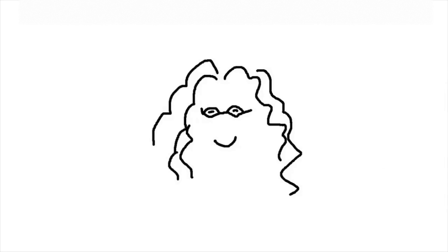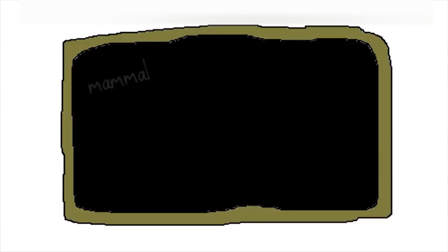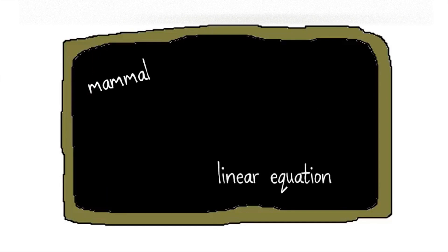This is Jennifer Gonzalez for Cult of Pedagogy. I'm going to demonstrate an instructional strategy called concept attainment. This is a technique for introducing a new idea, for helping students grasp a concept that is abstract, complicated, or difficult to pin down with a simple definition. In science, this could be something like the concept of mammal, or in math, linear equation. It could be a social studies topic like communism, or a grammar term like noun.